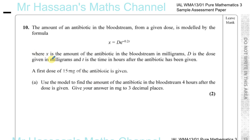Question number 10 from Pure Mathematics 3, International A-Level, the sample assessment paper. It's the last question in this paper. Here we're told that the amount of an antibiotic in the bloodstream from a given dose is modeled by the formula X equals D times E to the power of minus 0.2T, where X is the amount of the antibiotic in the bloodstream in milligrams, D is the dose given in milligrams, and T is the time in hours after the antibiotic has been given.